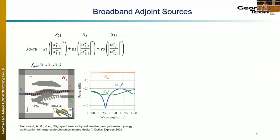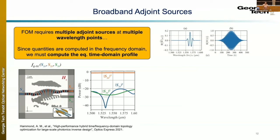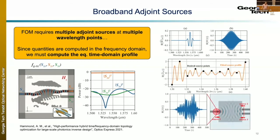For broadband adjoint sources — for example when the figure of merit involves S21, S11, and S31 across 100 nanometers of bandwidth — we need to convert frequency-domain adjoint quantities into time-domain adjoint sources. This is essentially a fitting problem: take a basis function that maps to our frequency-domain quantities, weight them appropriately, sum those together thanks to linearity, and we have an adjoint source corresponding to our figure of merit. That's how everything is done under the hood rather efficiently.